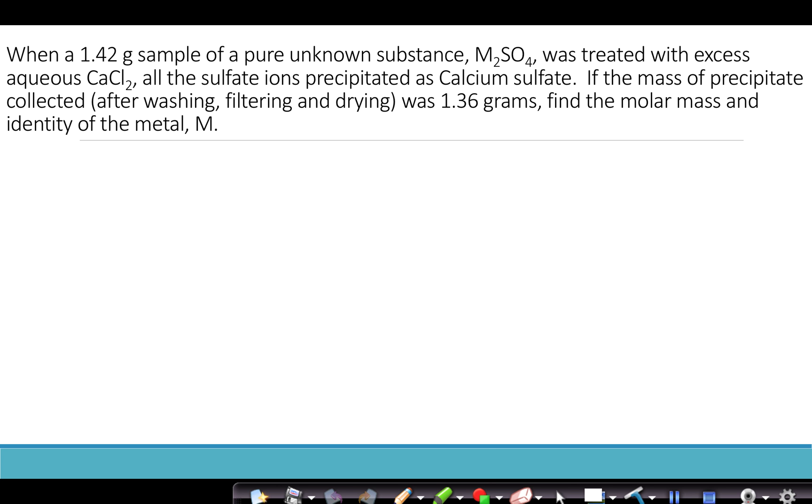When a 1.42 gram sample of a pure unknown substance M₂SO₄ was treated with excess aqueous calcium chloride, all the sulfate ions precipitated as calcium sulfate. If the mass of precipitate collected after washing, filtering, and drying was 1.36 grams, find the molar mass of the substance and the identity of the metal M.